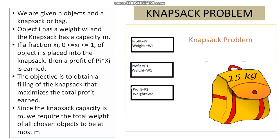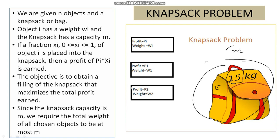First, let us try to understand what the knapsack problem is. A knapsack is a bag which has some capacity — some storage capacity. In the diagram it shows that the capacity of the bag is 15 kg, meaning only 15 kg of objects can be placed into this bag. The weight of the objects placed must be less than or equal to 15 kg. We are given n objects, and associated with each object we have its weight and its profit.